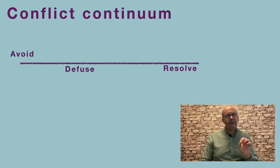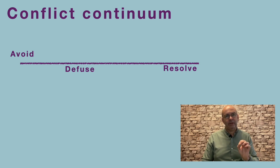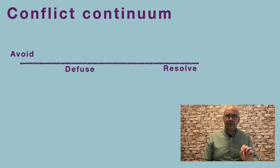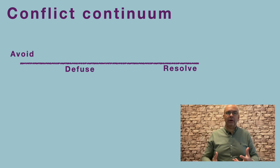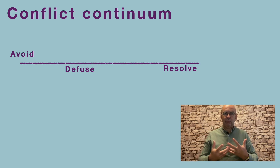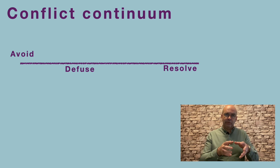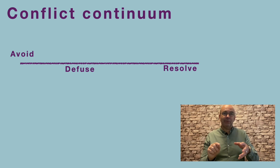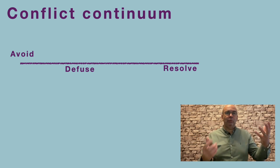Diffusing is where we bring in the emotional aspect of things. If emotions are getting in the way of rational thinking — if tempers are high, people are upset, in tears, or angry — then we need to focus on diffusing, not resolving. It is very, very difficult, if not impossible, to resolve something when we're in a heightened state of emotional arousal. So those are the three options: avoid, diffuse, and resolve.